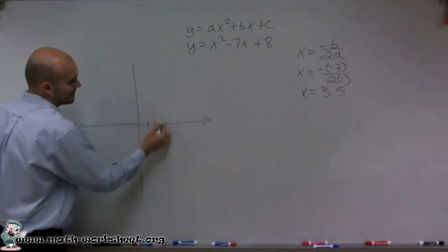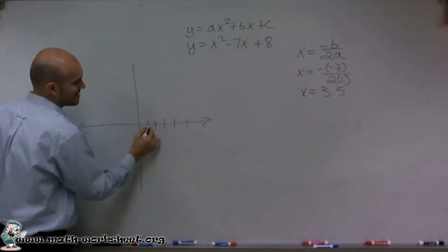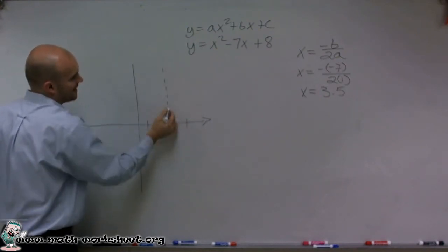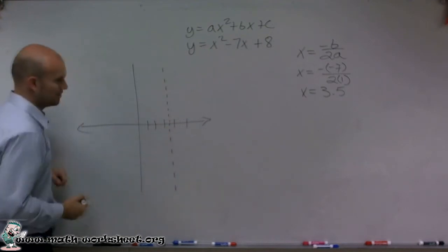Right now, the only thing I know about this graph is that I have a line of symmetry about 3.5.